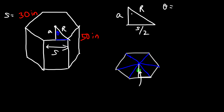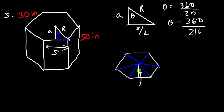A quick way to get theta is to take 360 and divide it by 2N, where N is the number of sides. For a hexagon, N is 6, so 2 times 6 is 12, and 360 divided by 12 gives you an angle of 30 degrees. That's a quick formula to find theta.